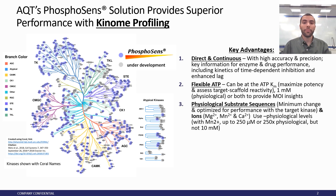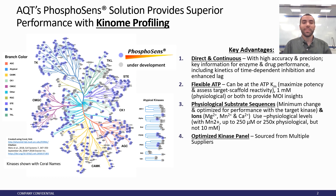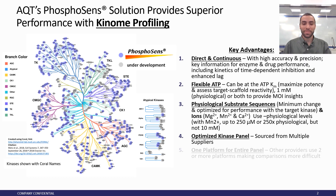Additionally, we have physiological substrate sequences, and these are based off of naturally occurring substrates in the human body. They offer great specificity for each and every kinase in our kinome profiling service. We also have an optimized kinase panel — we look at kinases from different vendors, compare and test them, and use the ones with the best activity and stability.